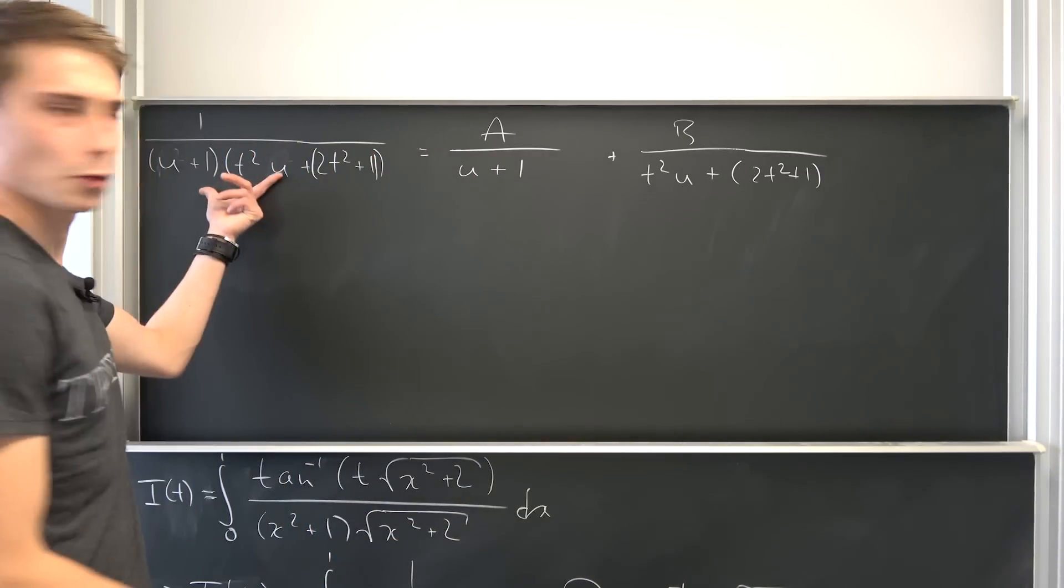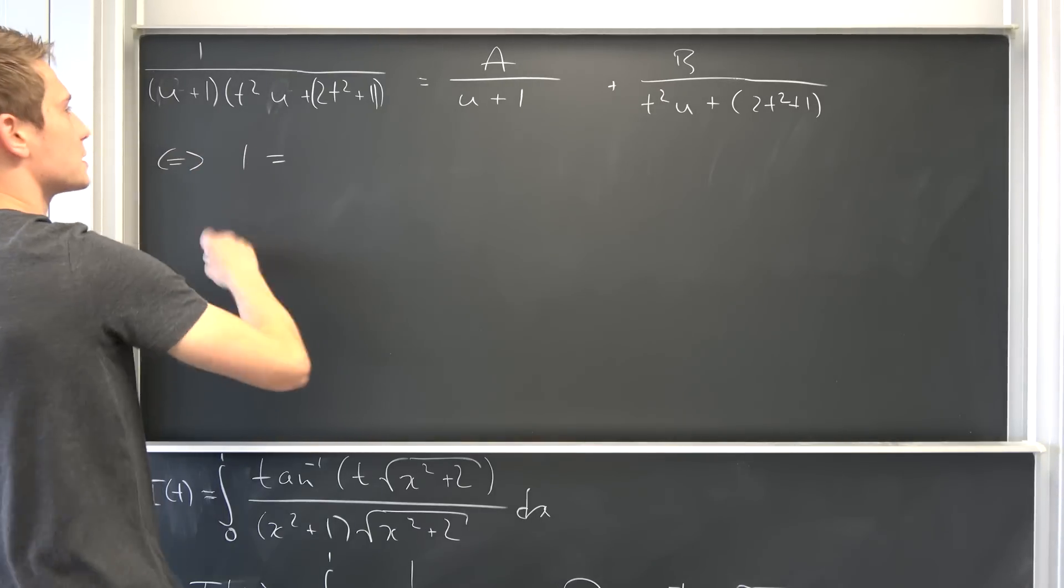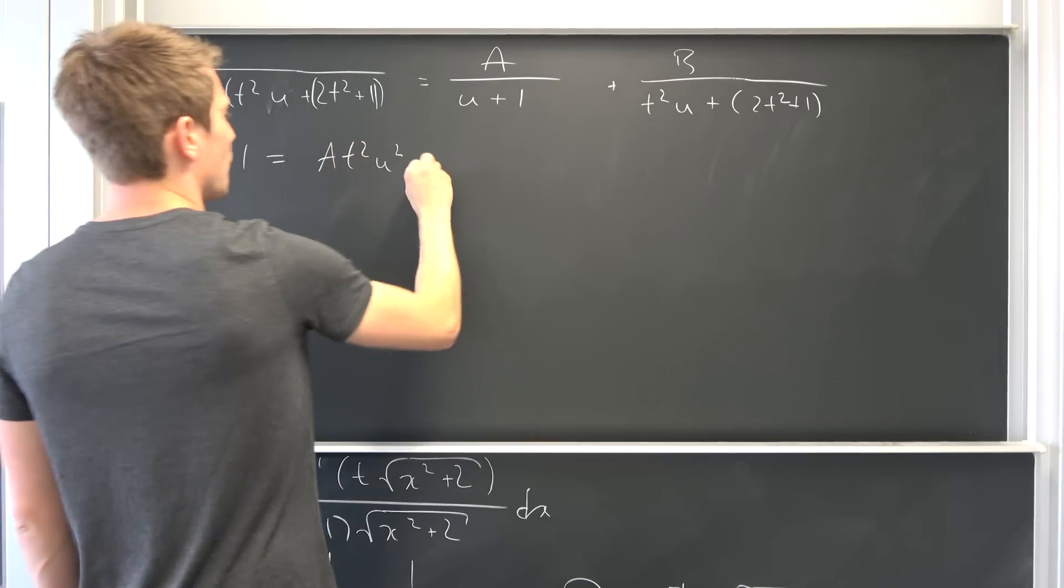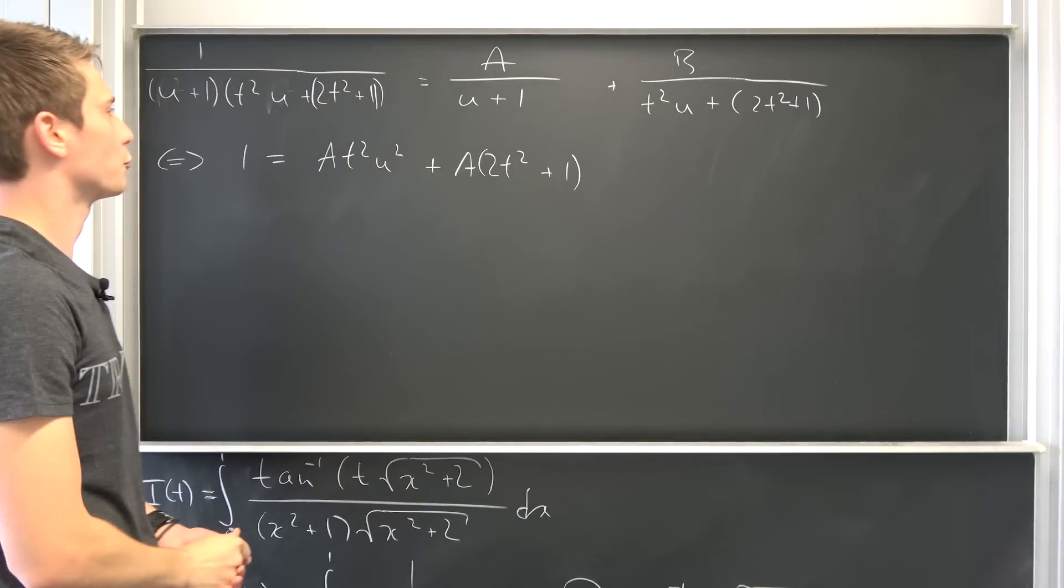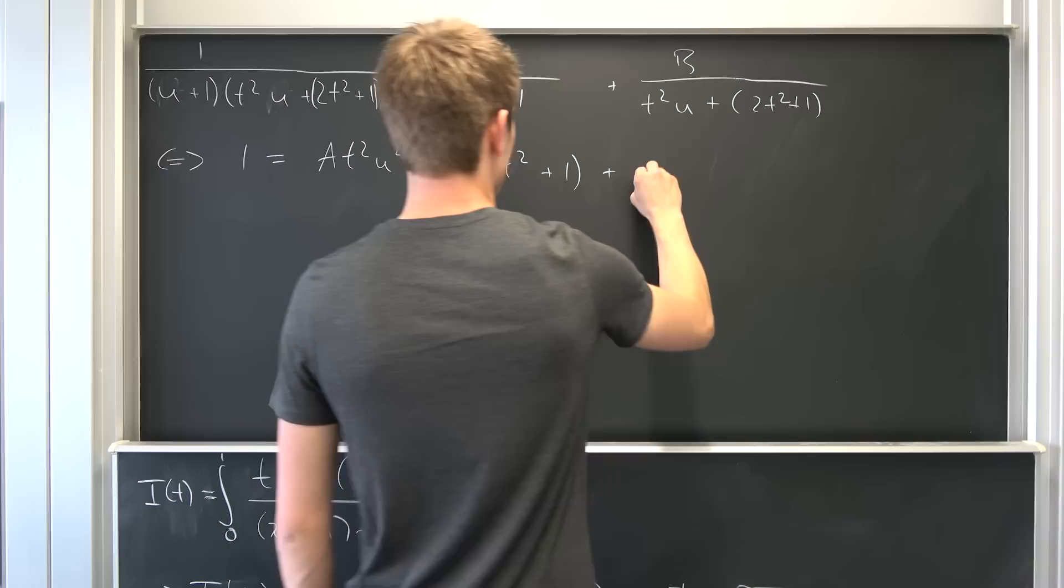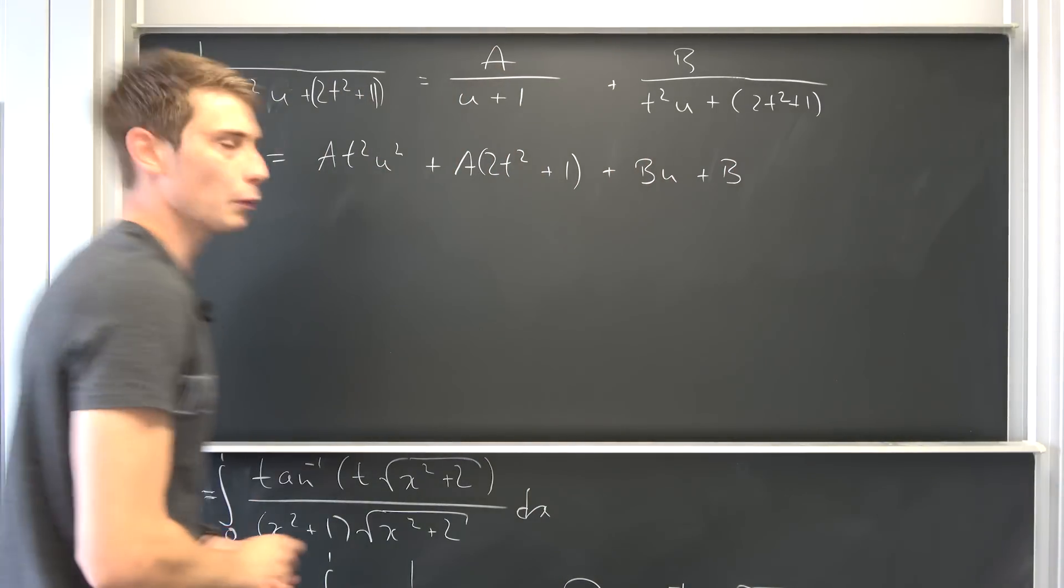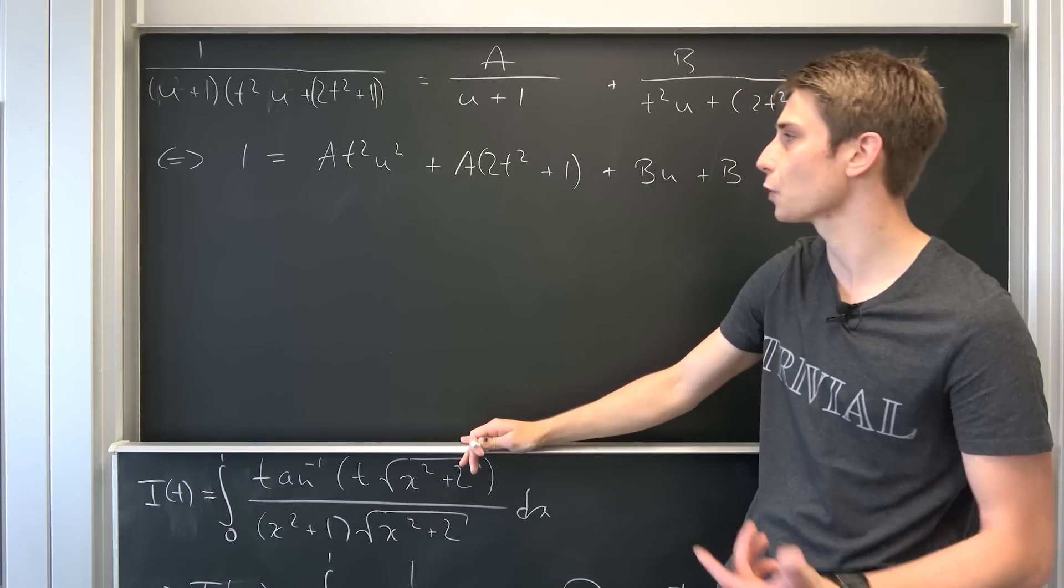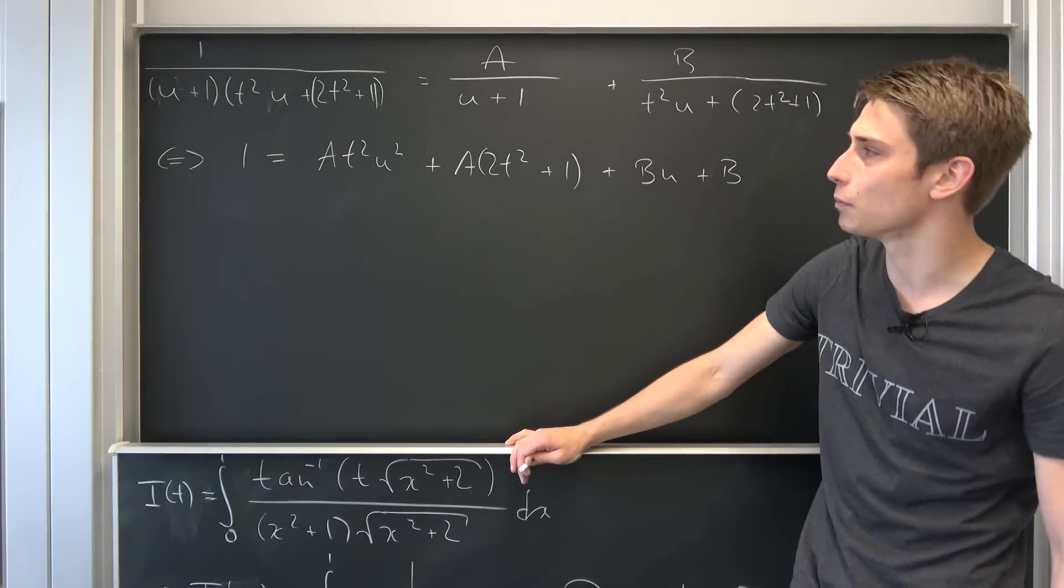And that means we need to decompose this now into two new fractions, one being A over u plus one, plus the other being B over t squared times u plus two times t squared plus one. And now we can just multiply both sides by this big denominator and see what we get at first. So it also means one is nothing but A times t squared u squared plus A times 2t squared plus one at first.